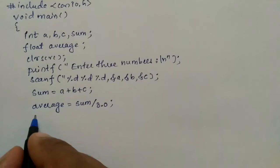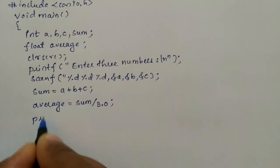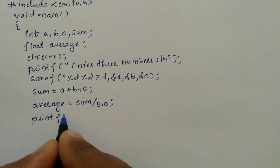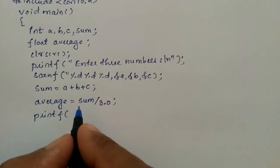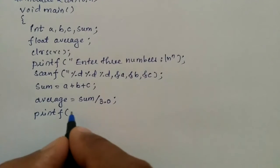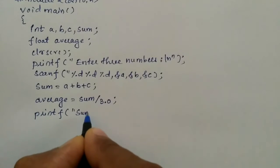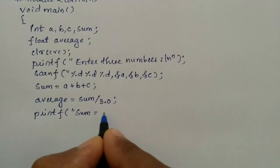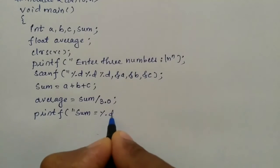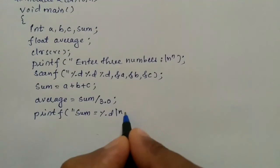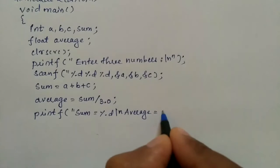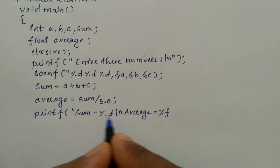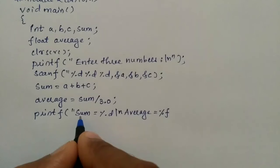Now we are going to write printf statement because after performing calculation of both sum and average we need to print it onto the console. Here I am going to write in double quotation marks: sum = %d\n, and then I will write average = %f.